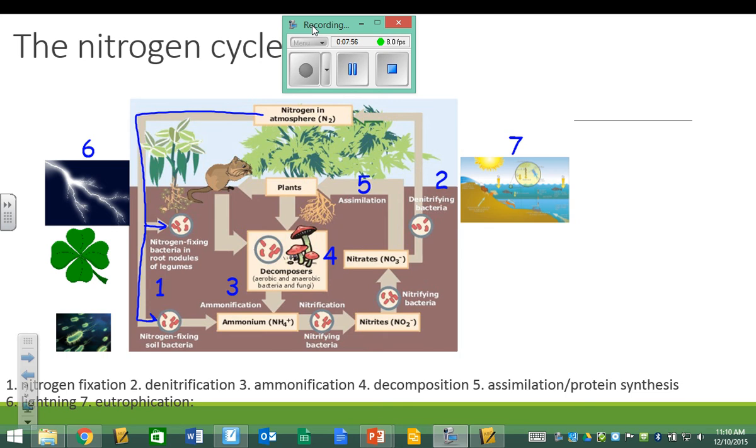So the first step of the nitrogen cycle that I have listed down here is nitrogen fixation. Nitrogen fixation is the process that takes that N2 gas and converts it. It will convert it very typically into some more usable form of nitrogen. It could be a nitrate. It could be ammonium depending on where it actually is.